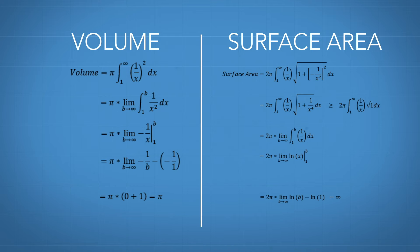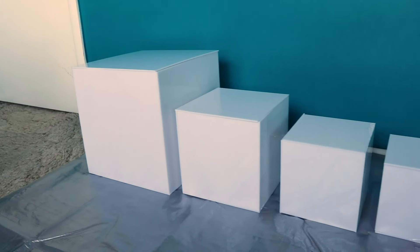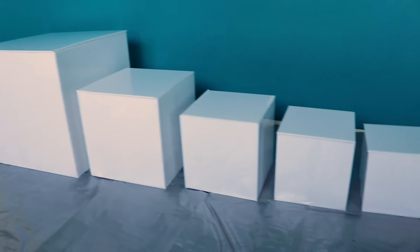The math behind Gabriel's horn is pretty complicated, so in this video we're going to look at a mathematically simpler object with the same weird property. Well, it's actually a series of objects. Here are a series of cubes that get smaller and smaller.